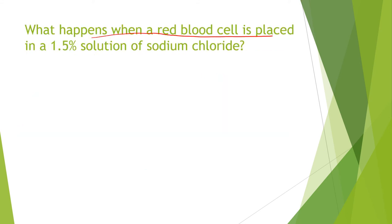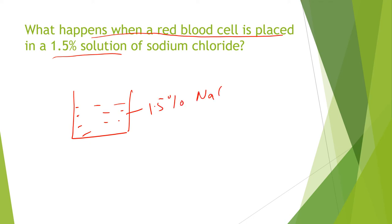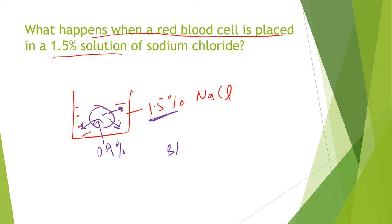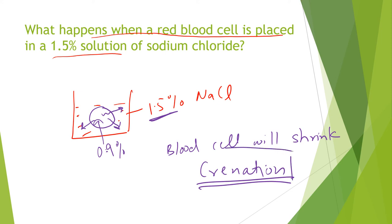What happens when a red blood cell is placed in a 1.5% NaCl solution? The concentration inside the blood cell is equivalent to 0.9% saline. Since the outside concentration of 1.5% is higher than the inside concentration of 0.9%, there is a concentration gradient and the fluid from inside the blood cell will start moving outside. The blood cell will shrink, and this process is known as crenation. After crenation, the blood cell dies.